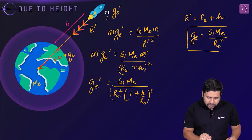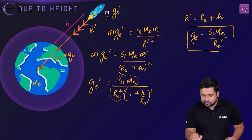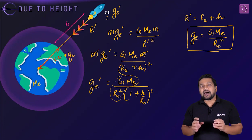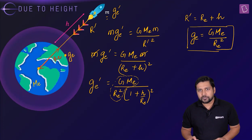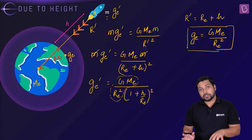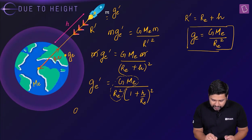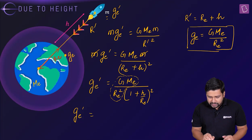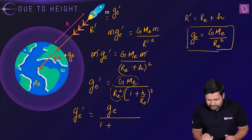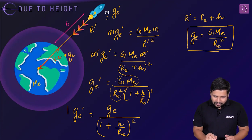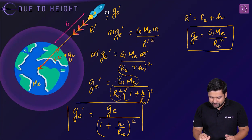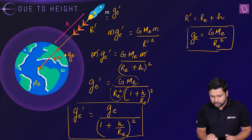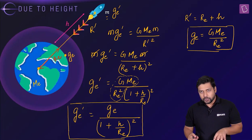We factored out r_e squared only to express this formula in terms of the acceleration due to gravity on the surface of the earth, so we can compare. The result is: g_e_dash equals g_e divided by (1 plus h by r_e) squared. This is the main expression for the variation of acceleration due to gravity with height — very, very important.